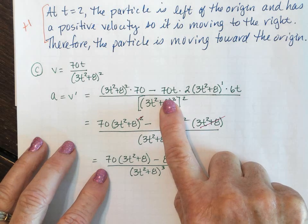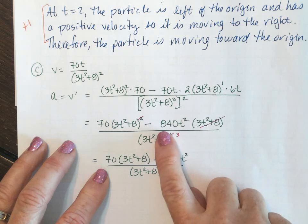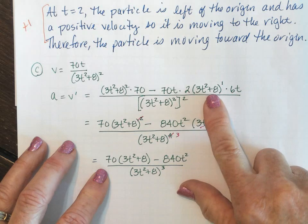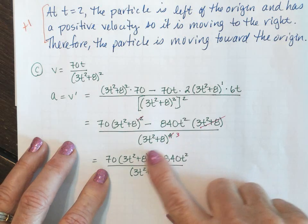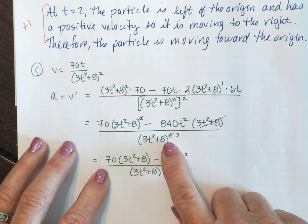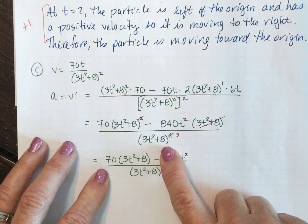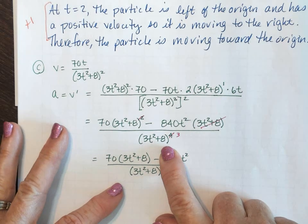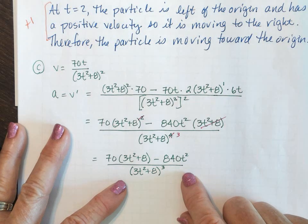70t times 2 times this 6t gave us the 840t² and then this 3t² + 8 right here. And then we had a 3t² + 8 to the fourth on the bottom. I opted to divide out a 3t² + 8. You do not have to do that. I just always simplify whenever I can, and then that simplifies down to here.